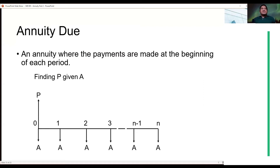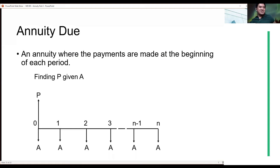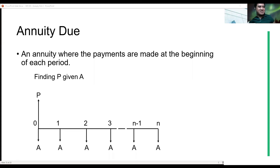So this annuity is a kind of annuity where the payments are made at the beginning of its payment period. So instead of paying like the regular ordinary annuity where you pay after, here you pay before.